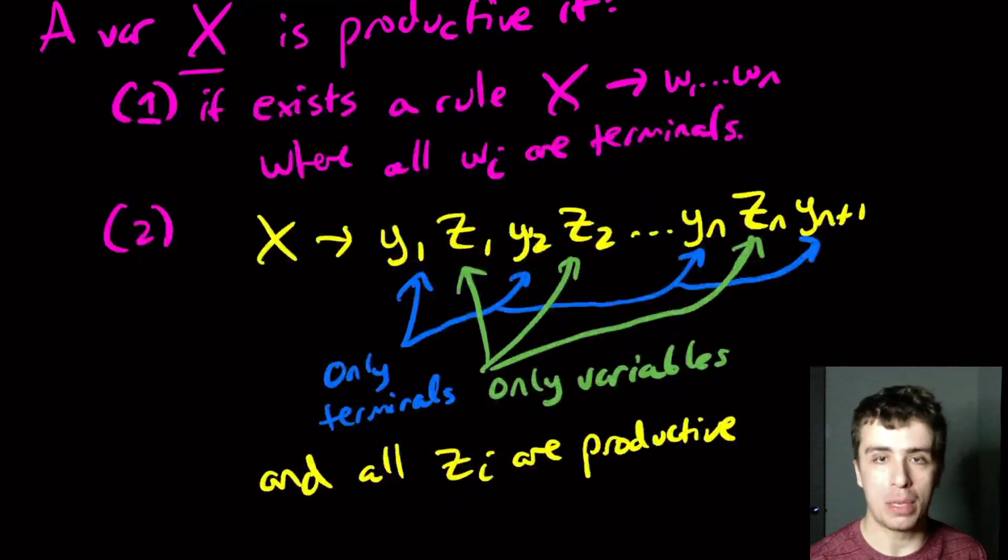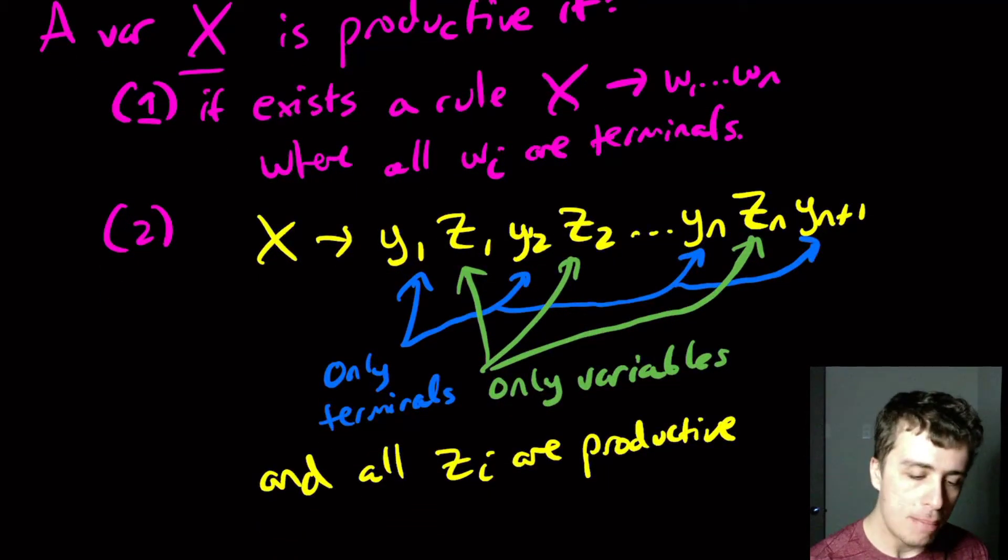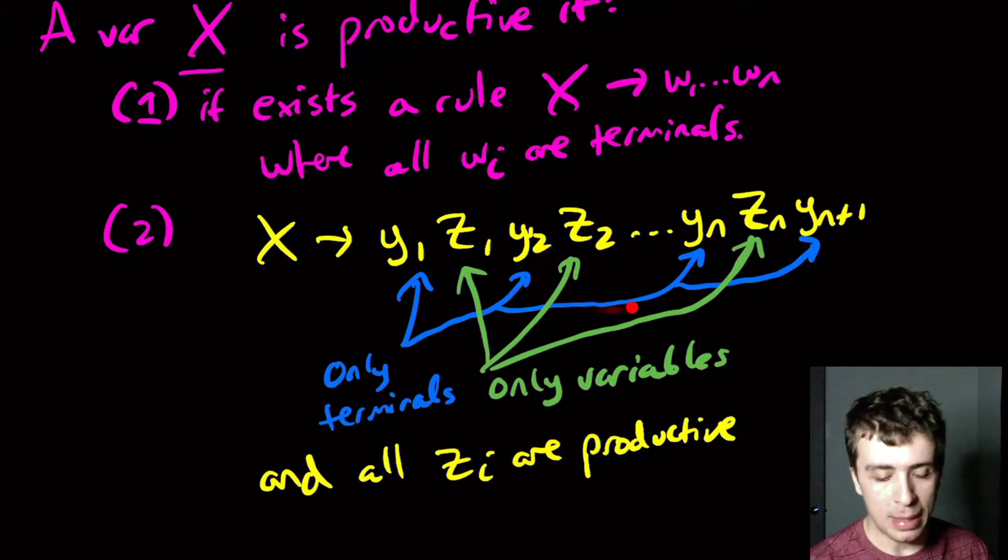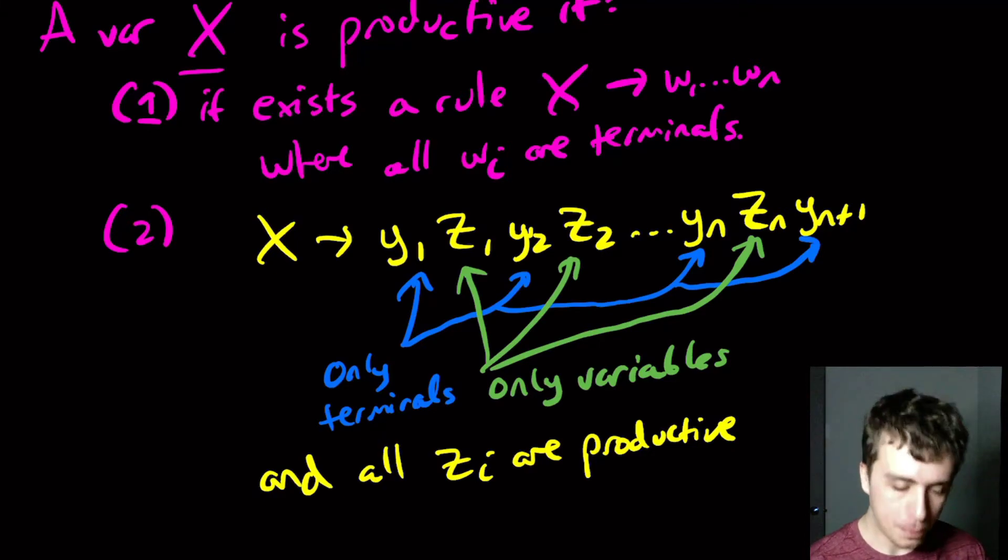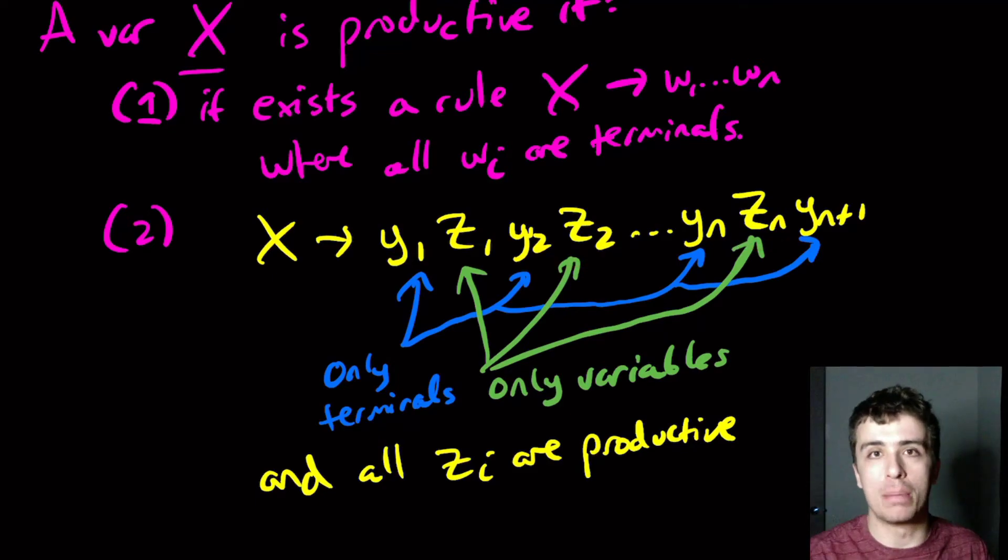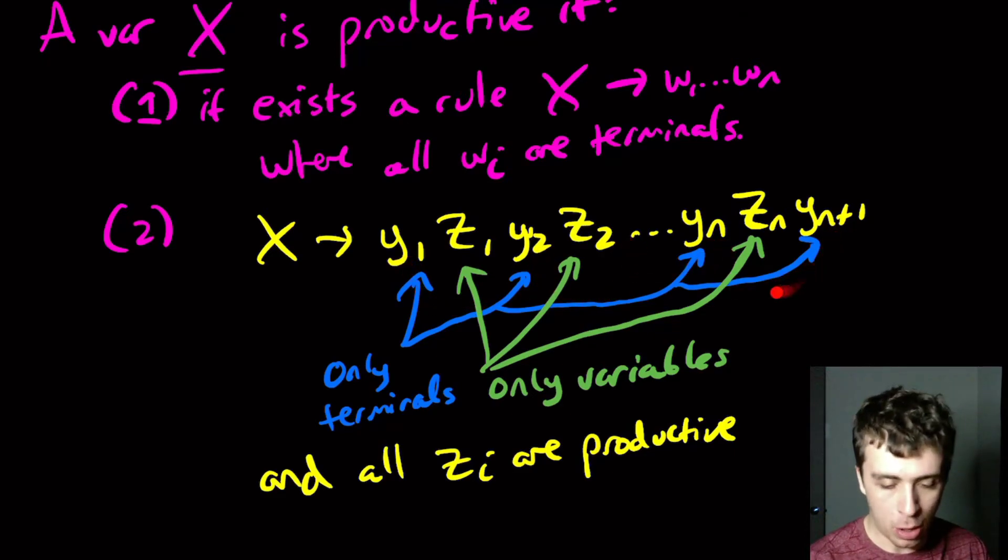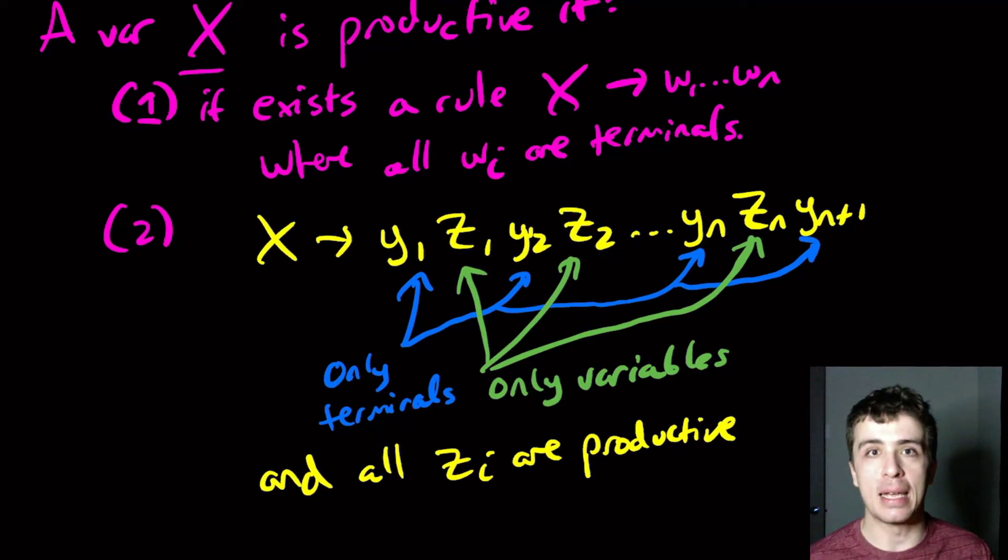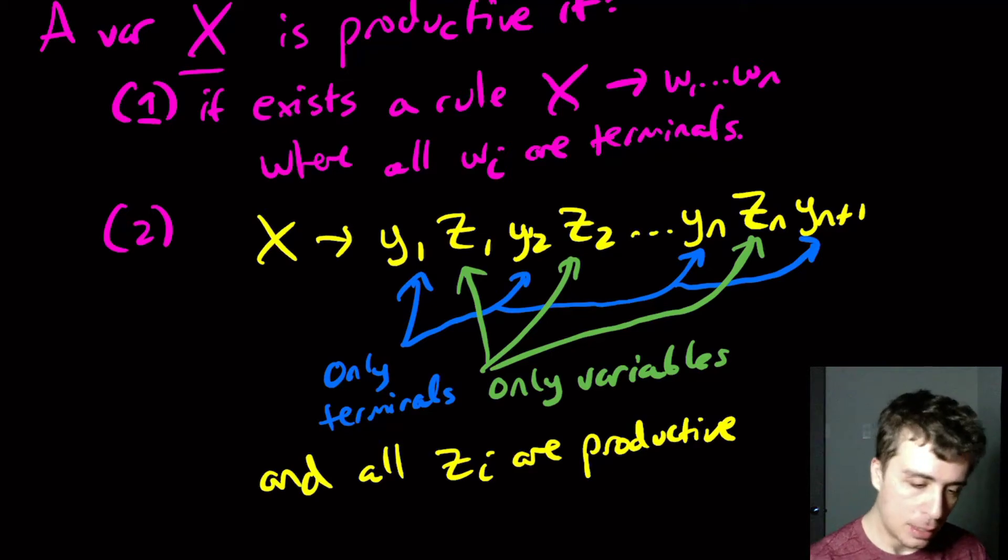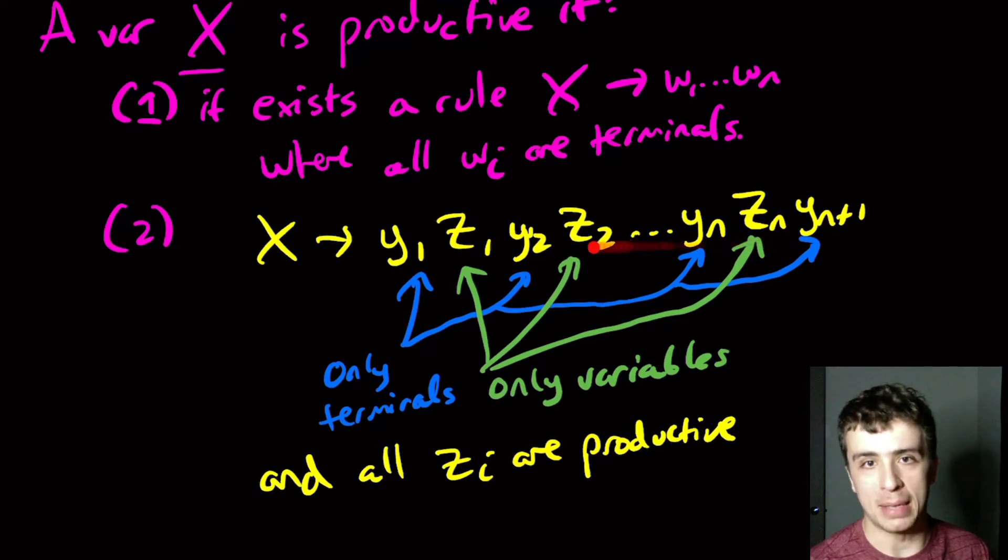And all of the z_i are productive. So this is kind of like the nullable condition, it's very similar. But here now we're saying productive, and we're allowing ourselves to have terminals around here. Then I claim that x is productive too. And the reason is that if all of the z_i's are productive, figure out whatever string that it could possibly make by induction. And then we got terminals in all the other places. So we got one gigantic set of terminals, which means that x is productive.